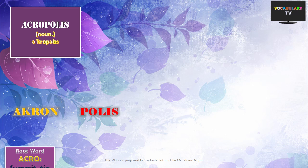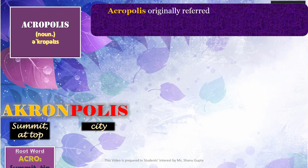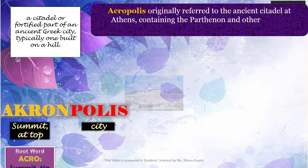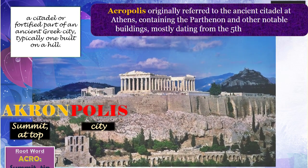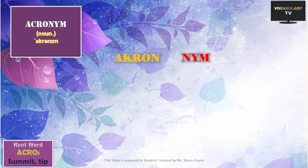Next is ACROPOLIS. Acro means summit or top of a hill, and polis means city, so acropolis literally means a city on top of a hill. The word originally referred to the ancient citadel at Athens containing the Parthenon and other notable buildings, mostly dating from the 5th century BC. Nowadays, the word can mean the upper fortified part of any ancient Greek city, or even any other city or district elsewhere, as in Central America.